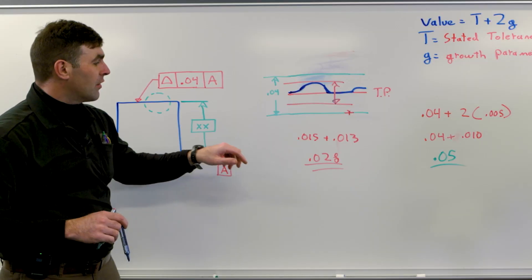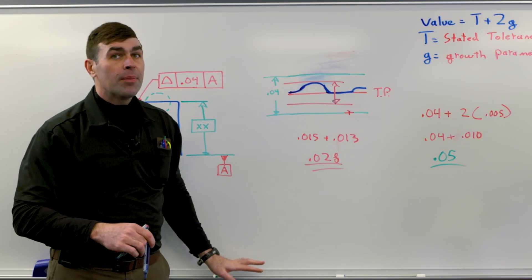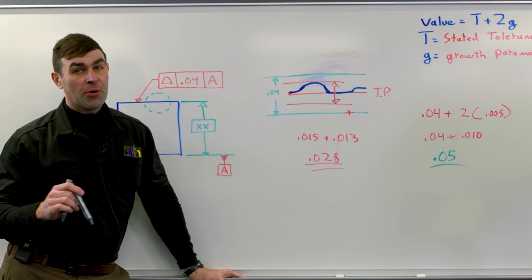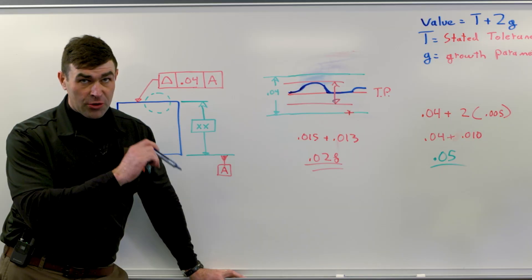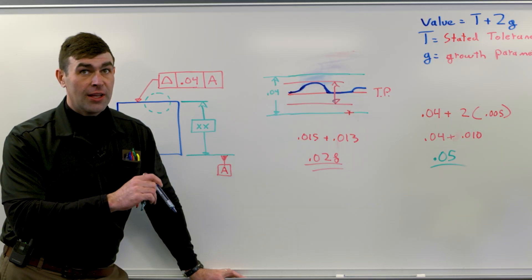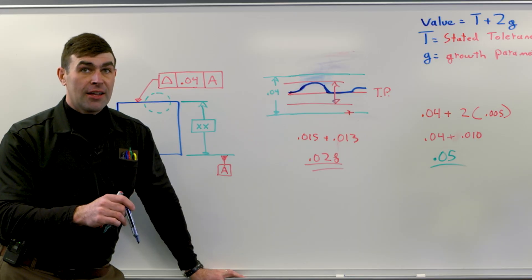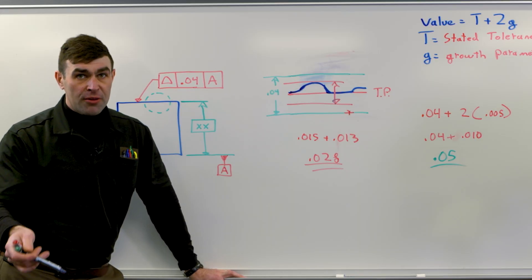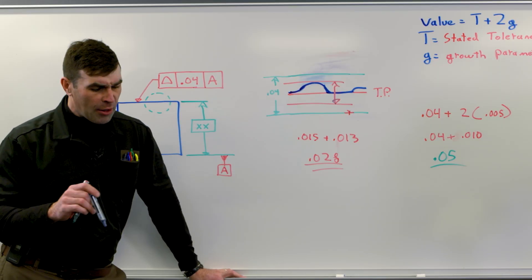The only one that won't is trying to measure with total indicator reading. Now, you can still measure it with the indicator, don't get me wrong there. All you would do is find the worst, right, reading, because you're going to be zeroed on the true profile. So say you get positive ten and negative twelve. You would take that negative twelve, double it, twenty-four thousandths would be what you report for your profile.